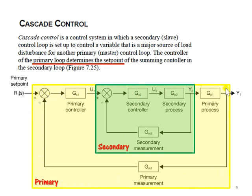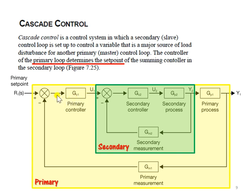Now looking at the primary loop: the primary loop has its own set value and feedback from the output, which is the process variable. The output of the summing junction is the error between the set value and the process variable, and the primary controller determines the suitable output based on this error.